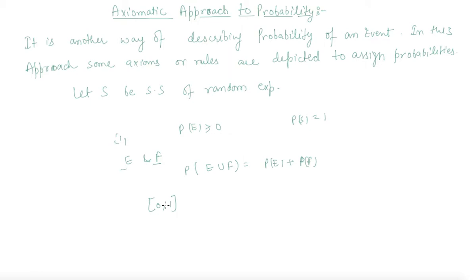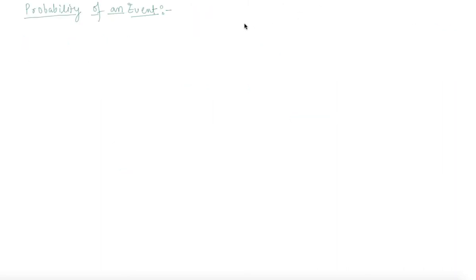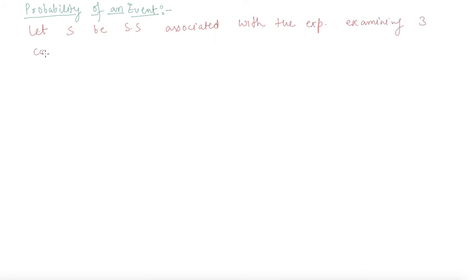Let us discuss what is the probability of an event with an example. Let S be the sample space associated with the experiment of examining three consecutive pens produced by a machine. Each pen can be either good or bad.